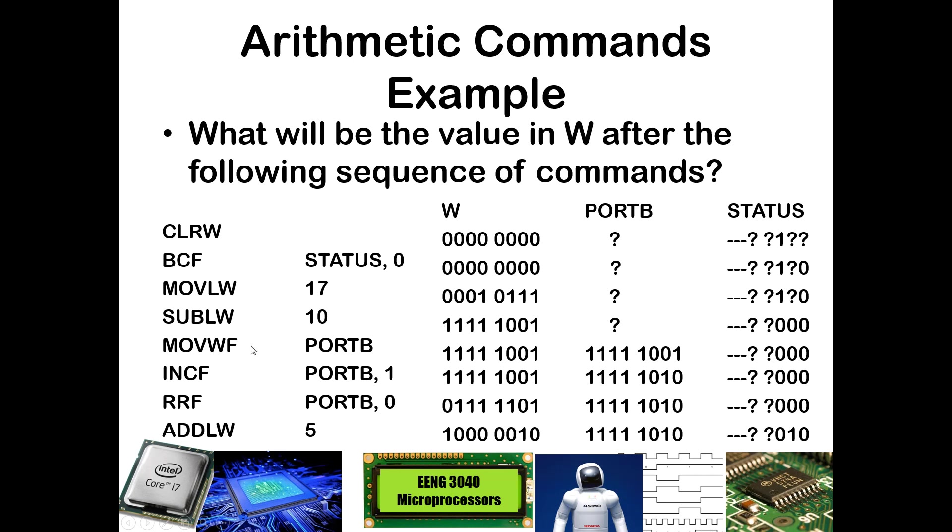Now we're simply moving what was in W over to PORTB, so we now have a copy over here. That's not going to impact our status register. Then we're going to increment the value in PORTB and put that back into PORTB itself. That doesn't impact W. That is going to be one more in PORTB. That did not result in a value of 0, so the Z bit is still 0 over here. There wasn't any carry, there wasn't any digit carry, so all of those bits stay at 0.